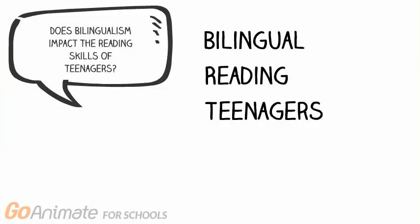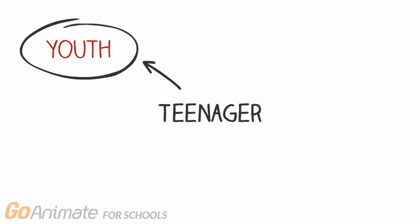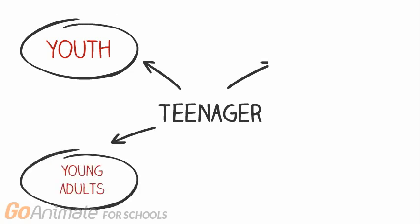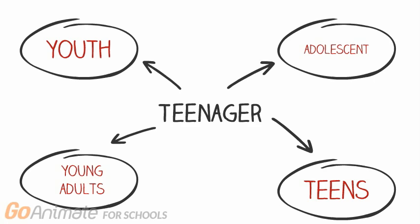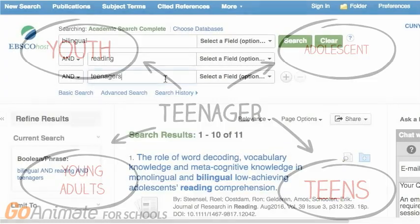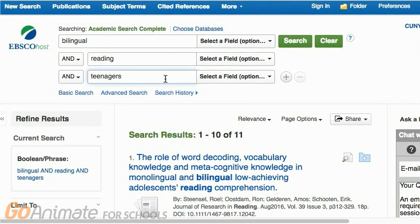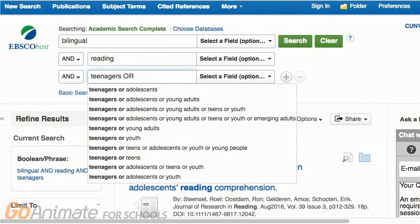Still, if you searched only with those three terms, you'd quickly hit a wall — you only have 11 articles to choose from. That's why you want to think about synonyms for your keywords. Synonyms are words or phrases that mean the same thing. There are a lot of synonyms for teenagers, and trying each one in the database will get you different results. You can combine all these search terms in a single box by using the word OR.